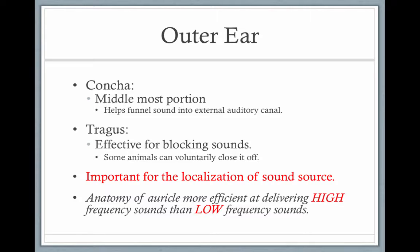The concha is the middlemost portion and helps funnel sounds into the external auditory canal. The tragus is effective for blocking sounds. When you're on the subway platform and it's really loud, you close your tragus with your finger. Some animals can voluntarily close it off by themselves.